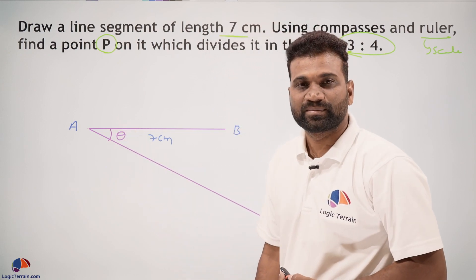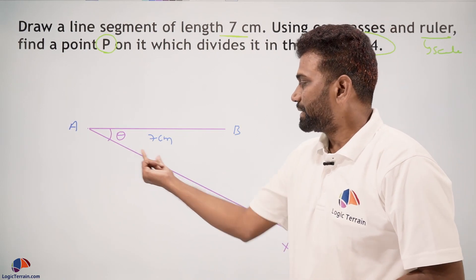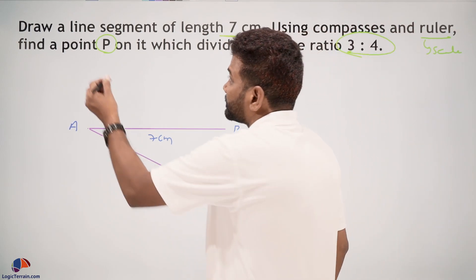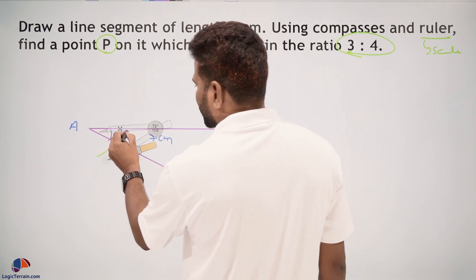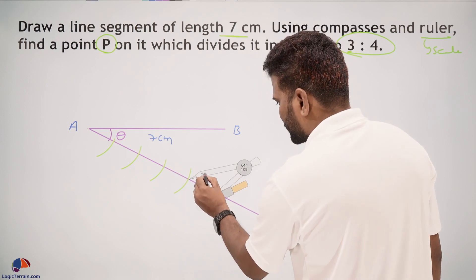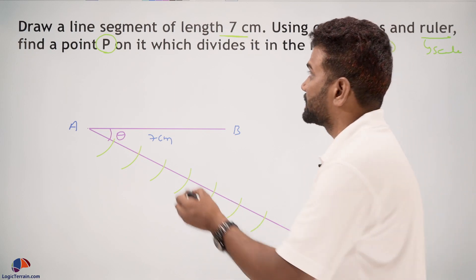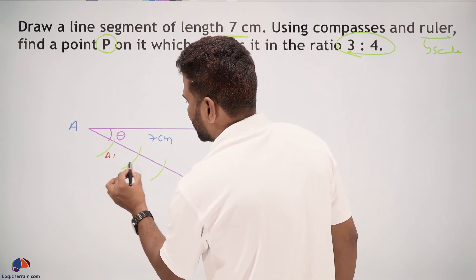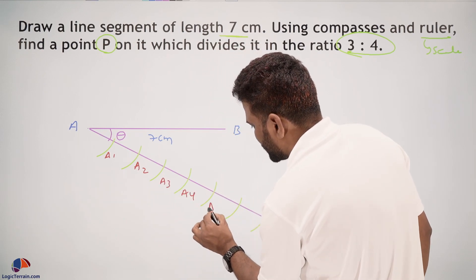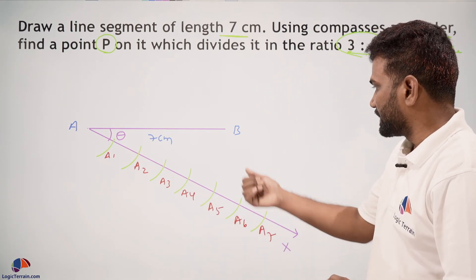On ray AX, make seven equal parts with the help of compass, taking A as center. One, two, three, four, five, six, and seven. These are seven equal parts. Name them A1, A2, A3, A4, A5, A6, and A7. Now join B and A7 with the help of ruler.